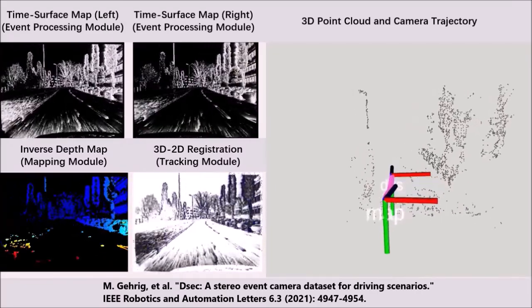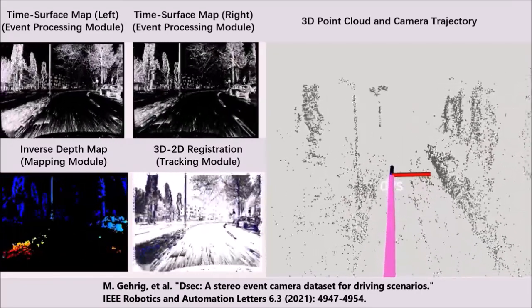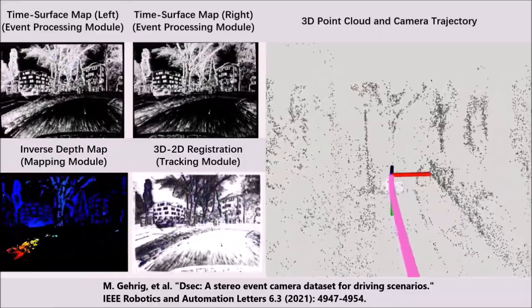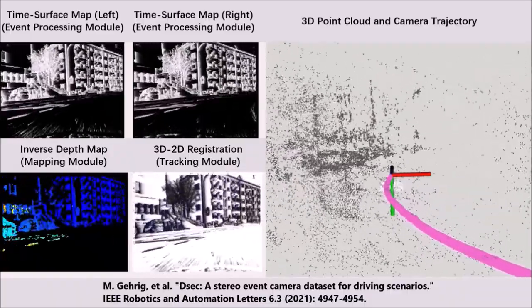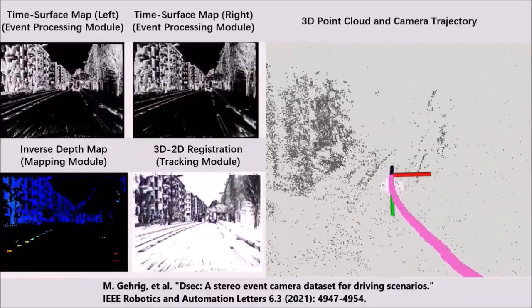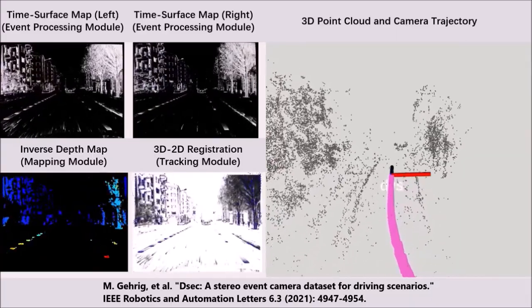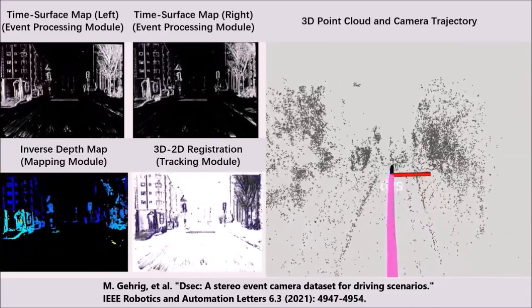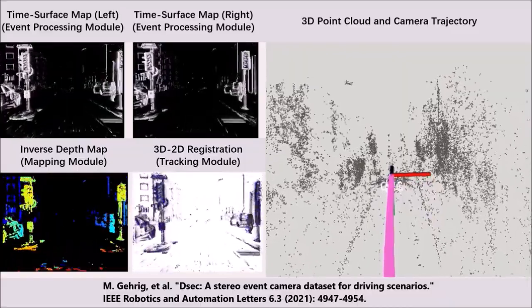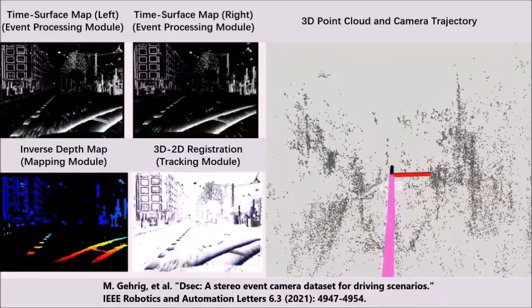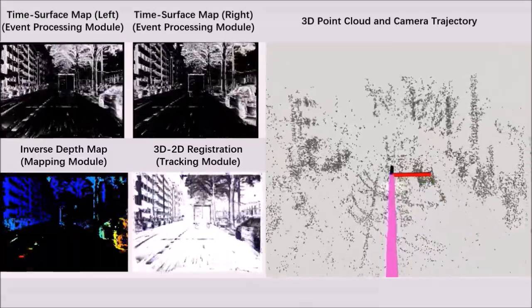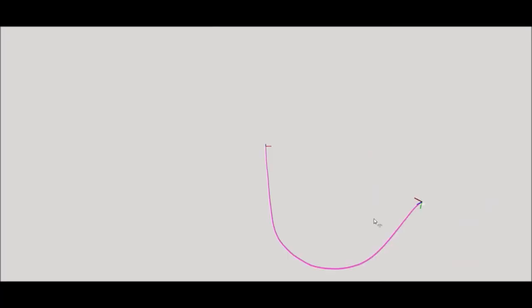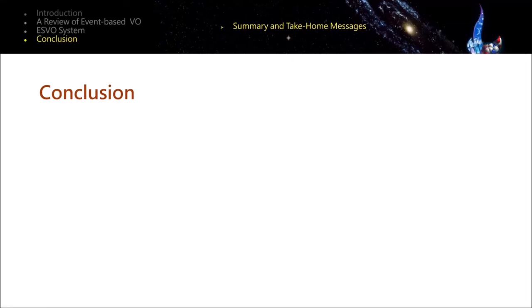The system is also tested under challenging illumination conditions such as low light and high dynamic range. Recently, a stereo event dataset for driving scenarios is published by Davide Scaramuzza's group. Our EVO system is the first event-based visual odometry pipeline that shows success on this dataset.